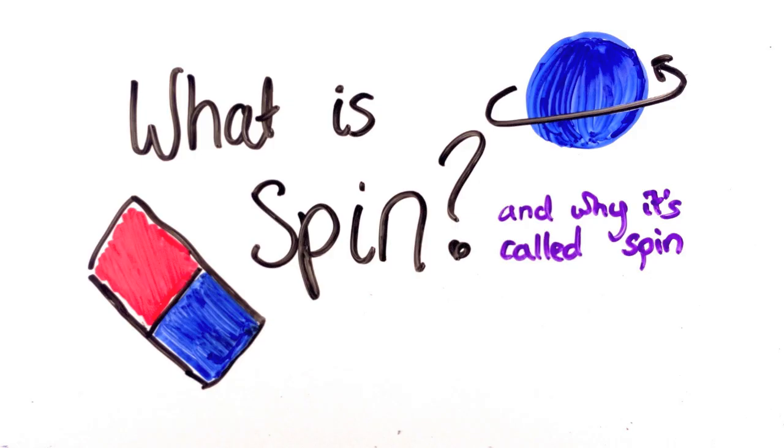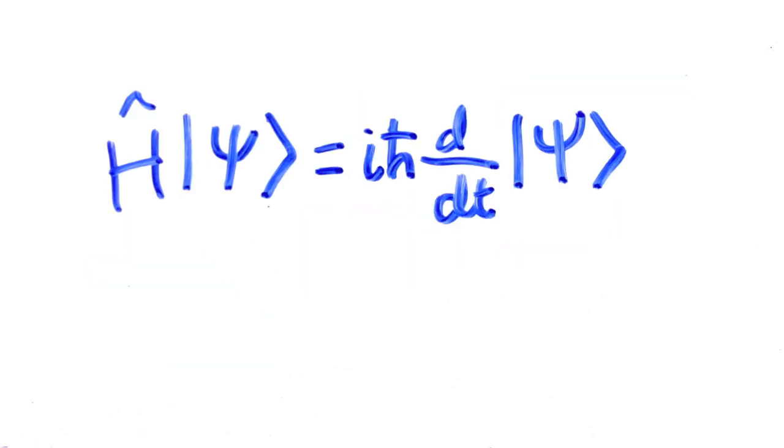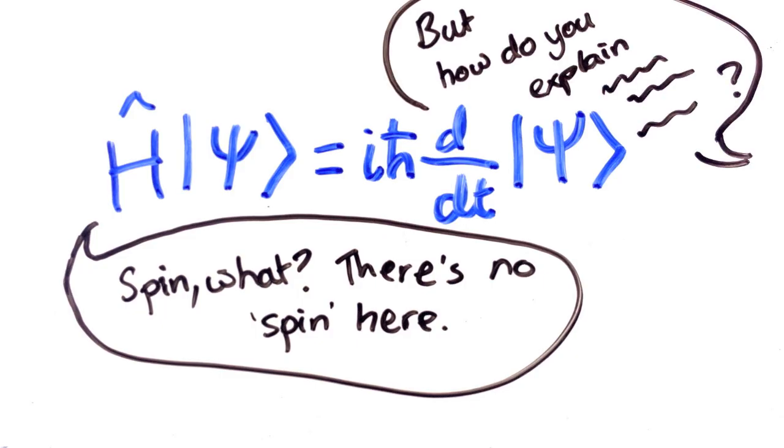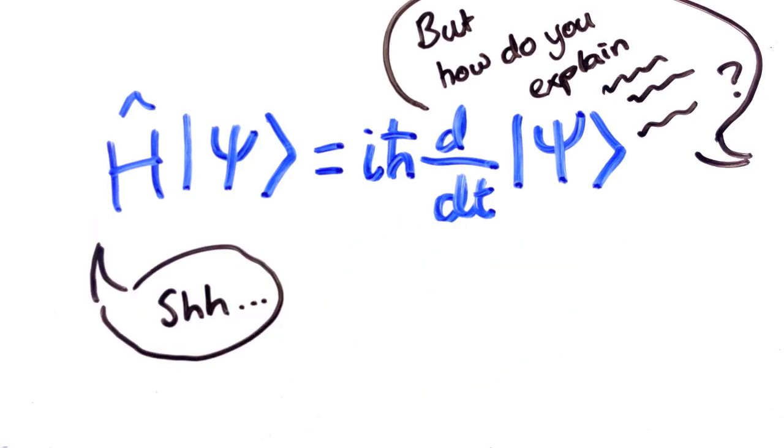Spin was a latecomer to the quantum mechanics party. Even after Schrödinger wrote his famous equation and everything seemed to be working, people didn't realise it existed. Then people realised that some particles seemed to have odd magnetic properties the original quantum mechanics didn't predict, and the source of that was labelled spin.